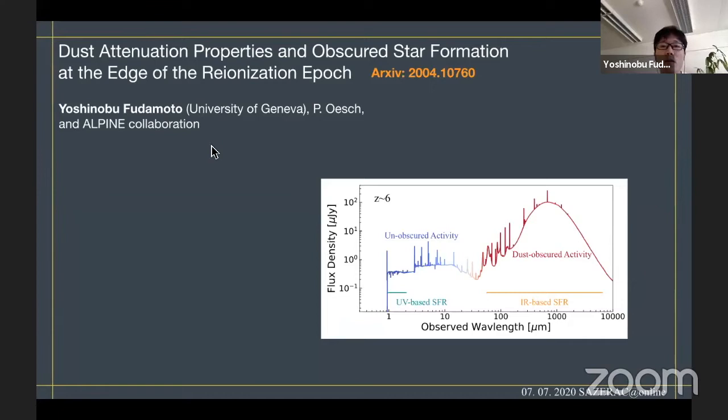My name is Yoshinobu Fudamoto from University of Geneva. I'm working with Pascal Oesch. Today I'm going to talk about dust attenuation properties and obscured star formation of star-forming galaxies in the reionization epoch at redshift 4 to 6, right after the reionization epoch.